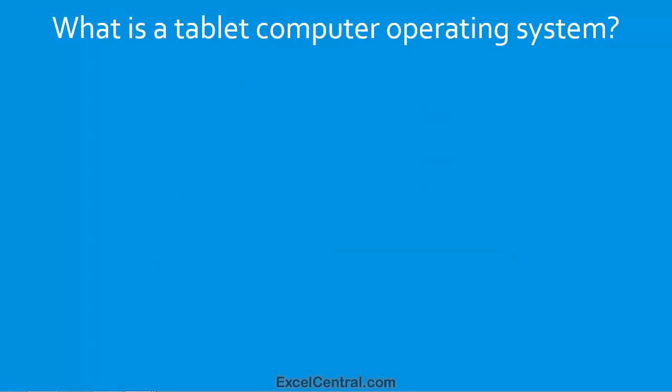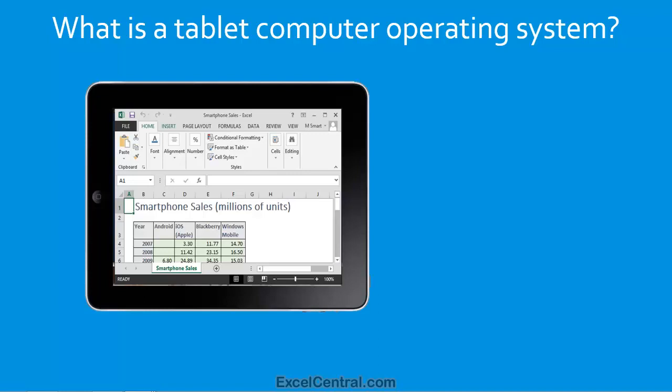Now let's move on to tablet computers. What exactly is a tablet computer? Apple's iPad, launched in 2010, was the first mass-market modern tablet computer. A tablet computer is similar to a very large smartphone, though most don't have telephony capability. Screen sizes are typically 7 or 10 inches, and just like a smartphone, they're usually controlled via a touchscreen. Some tablet computers have an optional keyboard available as an add-on.